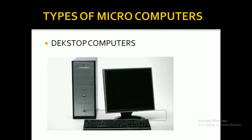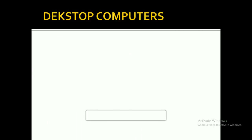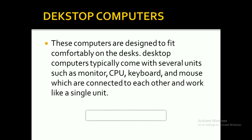The first type of microcomputers is the desktop computer. We use desktop computers commonly in our homes, offices, banks, schools, universities, and colleges. These computers are designed to fit comfortably on a desk. Desktop computers typically come with several units such as a monitor, CPU, keyboard, and mouse — components connected to each other that work like a single unit.